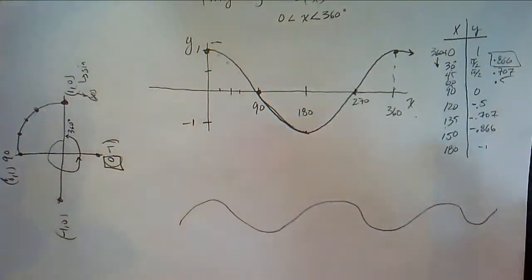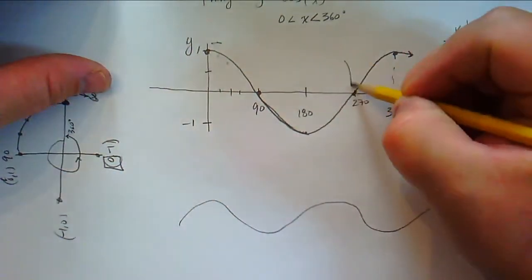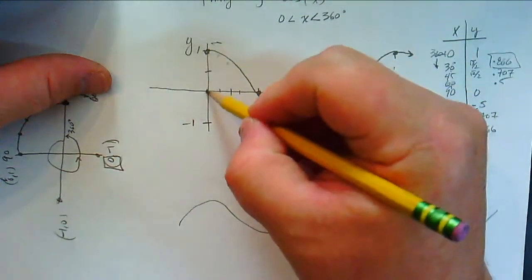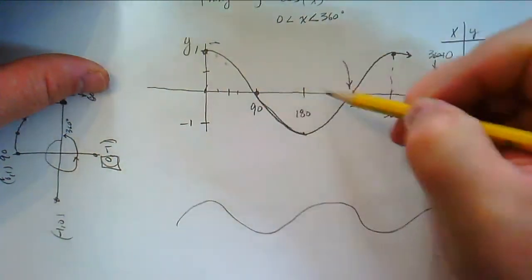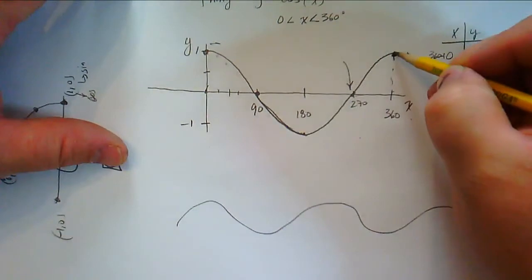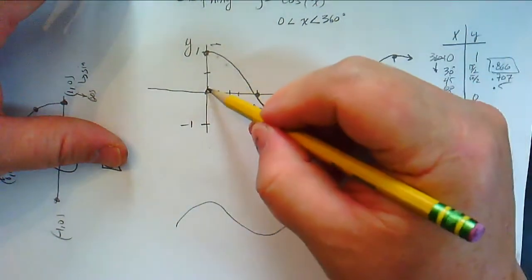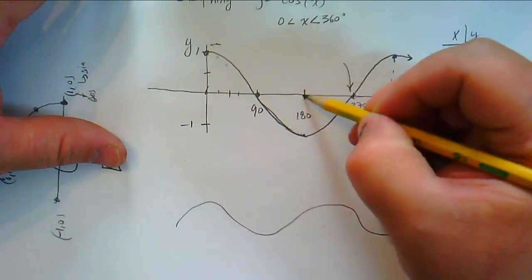Now, sine and cosine are really, really similar. The difference is, sine starts here at 0, 0, and goes up, and it ends here. So sine goes up, down, and up.